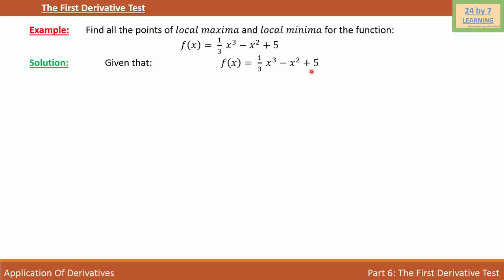In order to find the local maxima and local minima, I need to first differentiate this function with respect to x. If I do that, I will get f'(x) = x² - 2x. As you can see, x is common here, so I have taken x common and inside the bracket I have x minus 2.